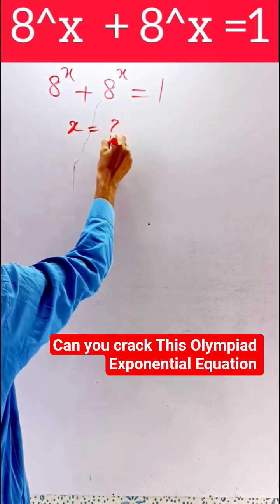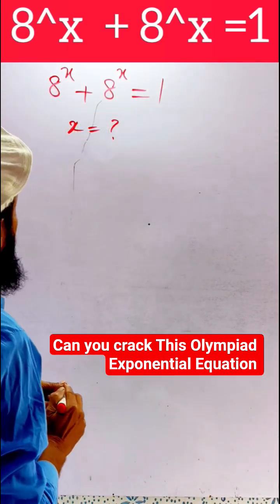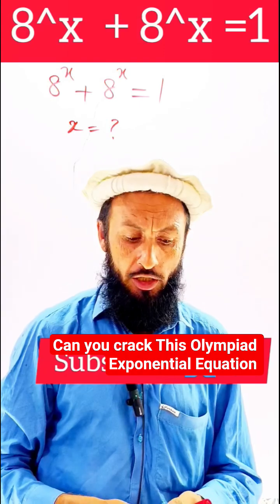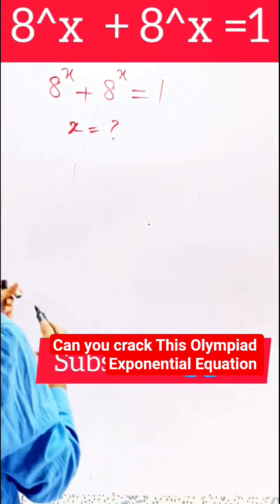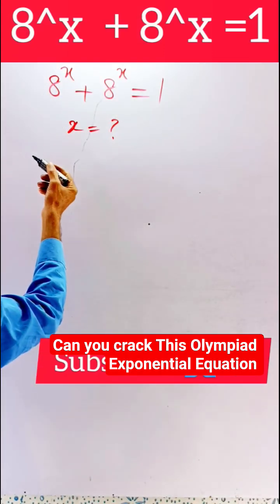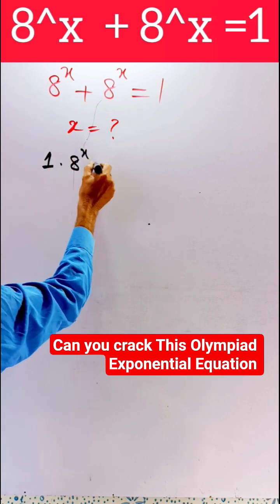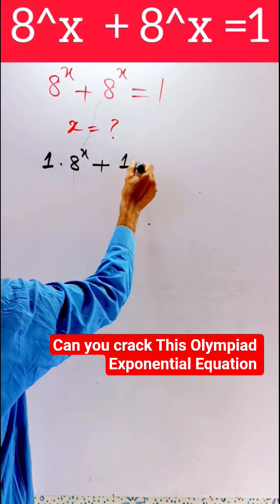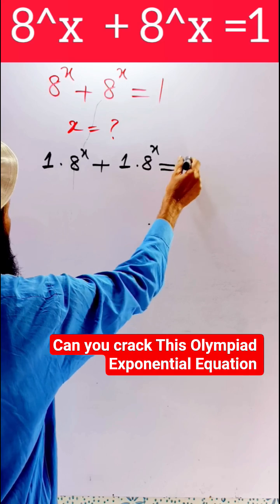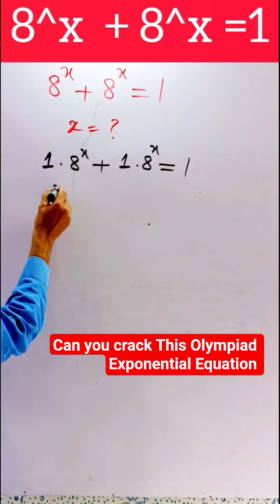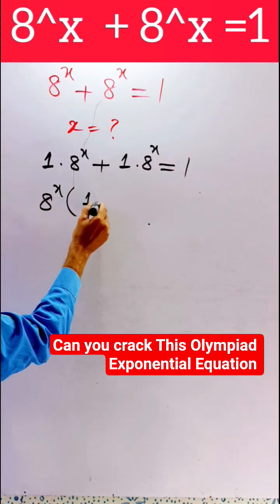In this type of question when the bases are same and powers are same, we add their coefficients. The coefficient of 8^x is 1. We can write 1·8^x + 1·8^x = 1. We are taking common: 8^x is common, so 8^x(1 + 1) = 1.